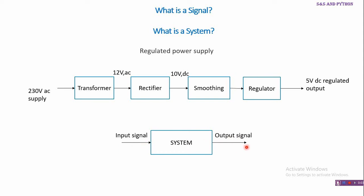A system responds to an input signal and gives an output signal. The signal itself is what contains some information. For example, the transformer has an input of 230 volts AC — this is a voltage signal which contains information that it is 230 volts RMS at 50 Hz. When you apply this signal to the transformer, it gives an output of 12 volts RMS AC at 50 Hz — an output signal containing information about its magnitude and frequency.